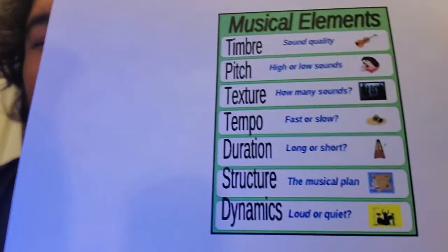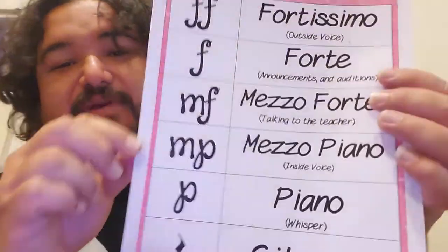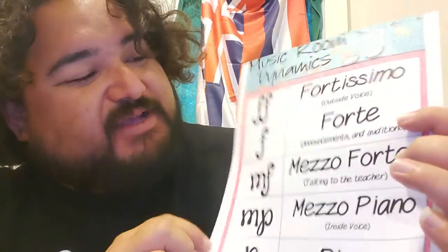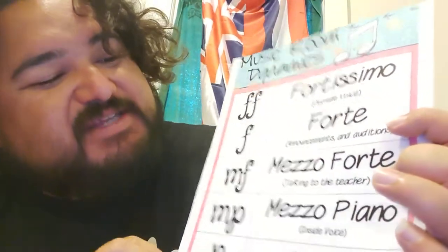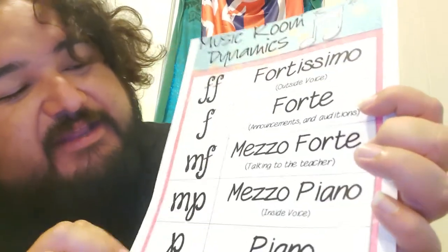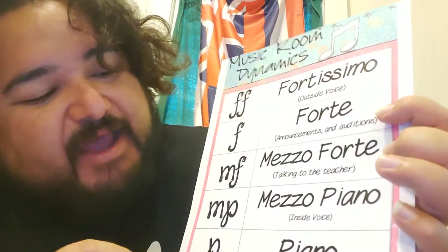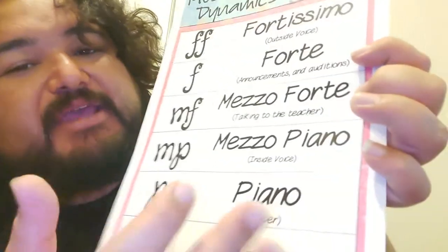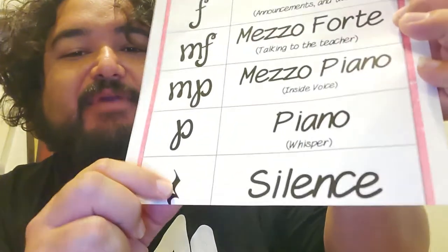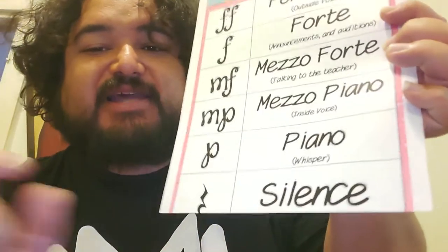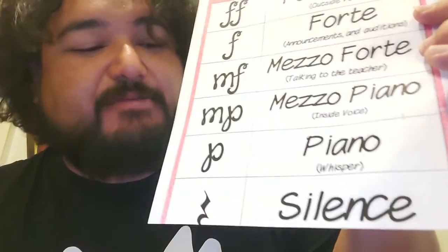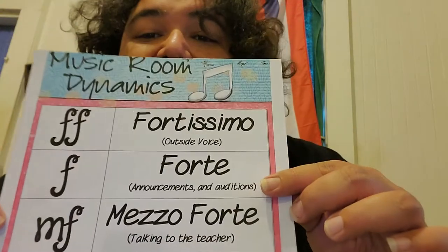Dynamics — how loud or how quiet. Remember dynamics? We had a lot of fun with those. I've got a little bigger print for this one. Fortissimo: an outside voice. Forte: for announcements and auditions. Mezzo forte: like talking to the teacher. Mezzo piano: the inside voice. Piano: the whisper. And don't forget we have rest — silence in a song can be just as effective as a beat.